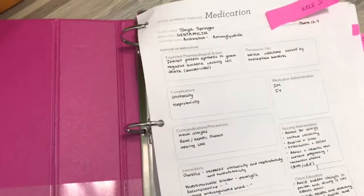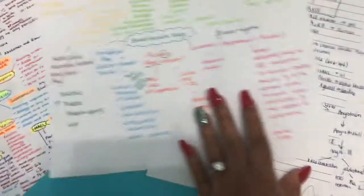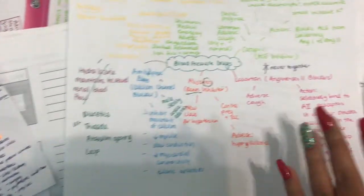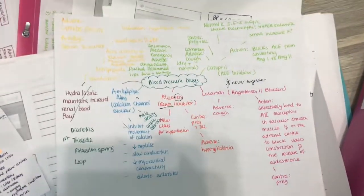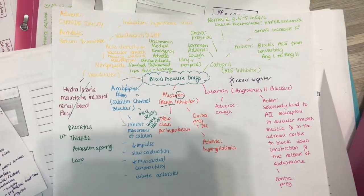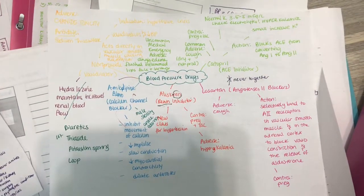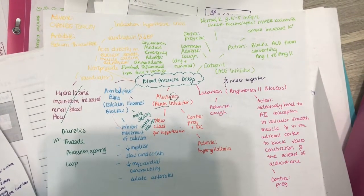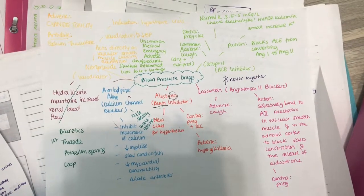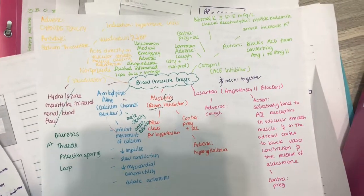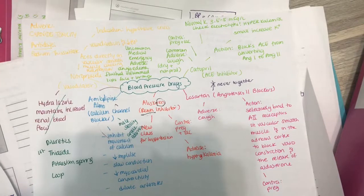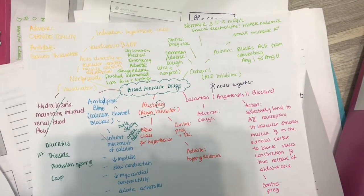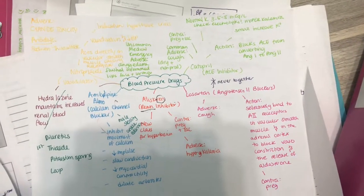It's actually best for you to just make a map so that you can compare the drugs, because when you're on the test, it's all going to merge together. When you get a question where option A, B, and C are all drugs you just learned, they're all going to blend together and you're going to forget which one is which.